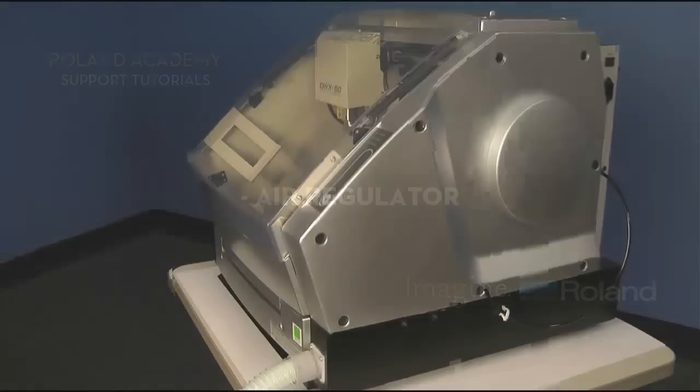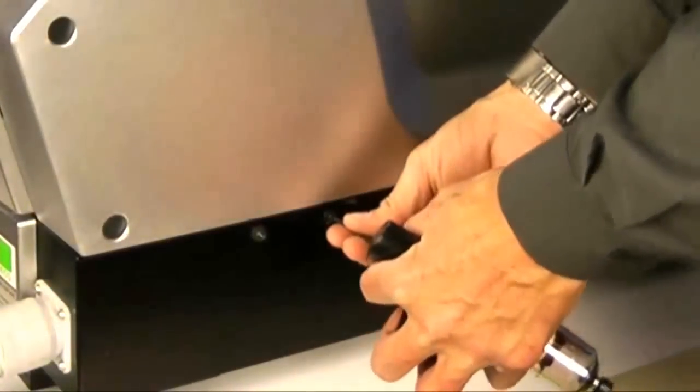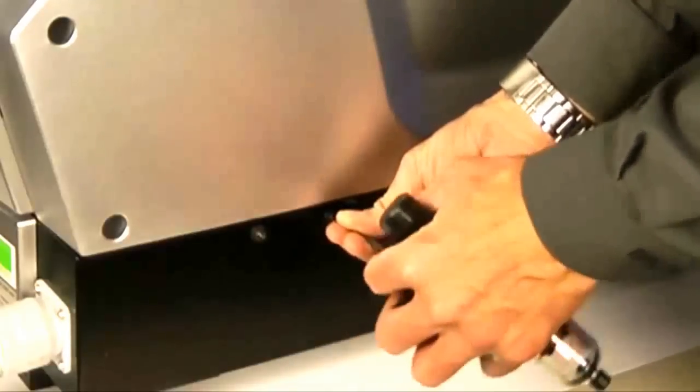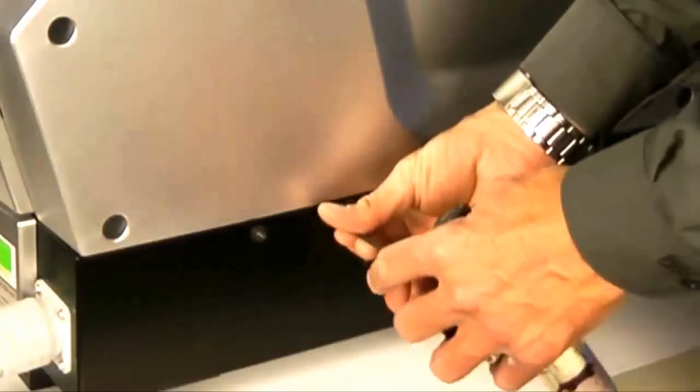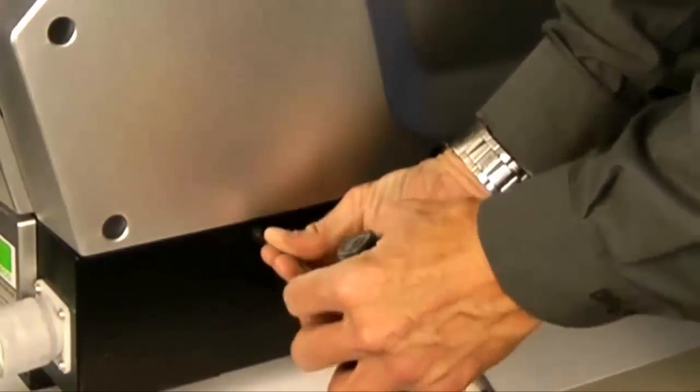You are now ready to attach the air regulator to the machine. To do this, first locate and loosen the securing screws on the right side of the machine that allows the recess on the rear of the regulator to fit over the screws.